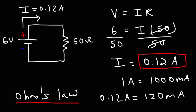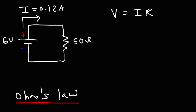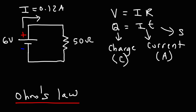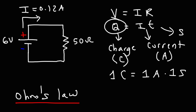Electric current represents the flow of electrons — it tells you the rate at which electrons are flowing. The formula Q = IT relates electric charge Q, current I, and time T in seconds. Current is measured in amps, electric charge in coulombs. One coulomb equals 1 amp times 1 second. Electric charge represents the quantity of electrons, while current is the rate of charge flow.